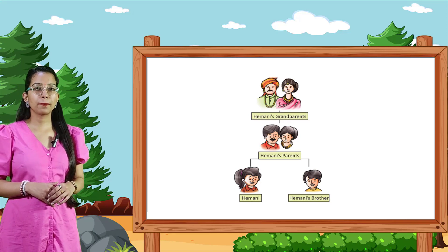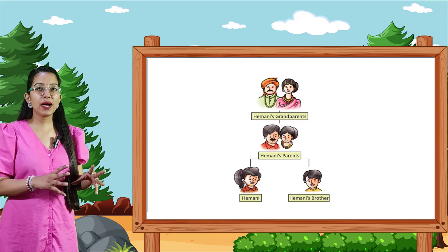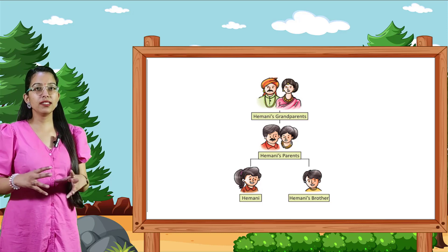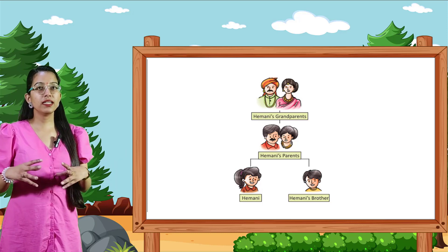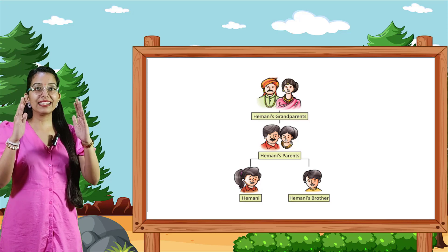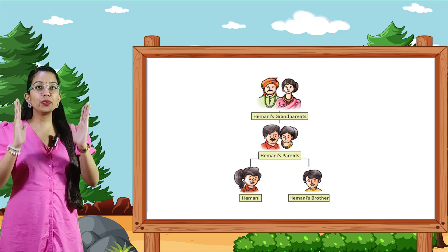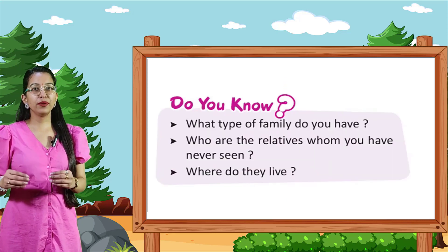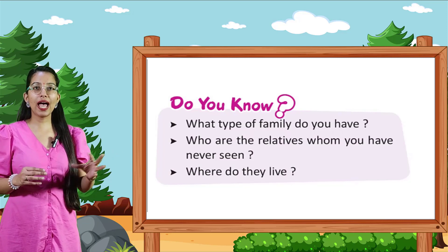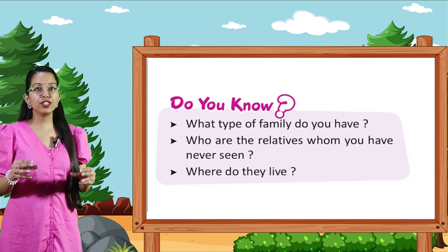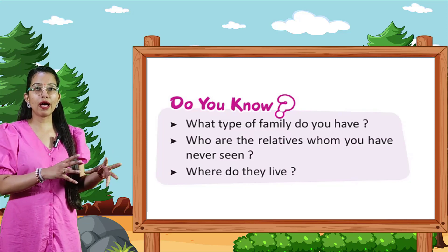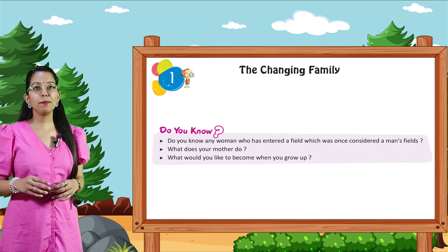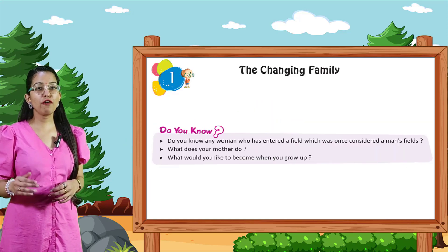Now look at the current family tree. It shows Himani's grandparents, Himani's parents, and Himani and Himani's brother — this is a nuclear setup. Do you know what type of family you have? Who are the relatives whom you have never seen? Where do they live? Come to page number 8.